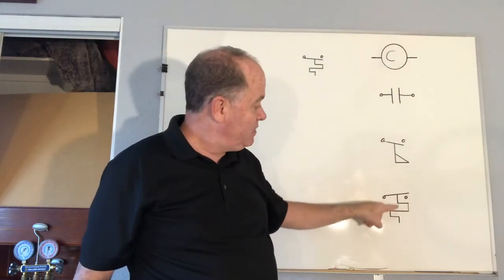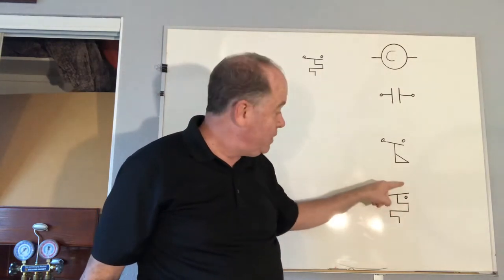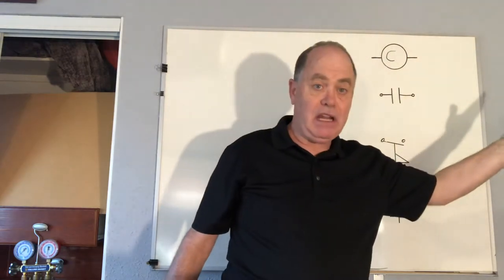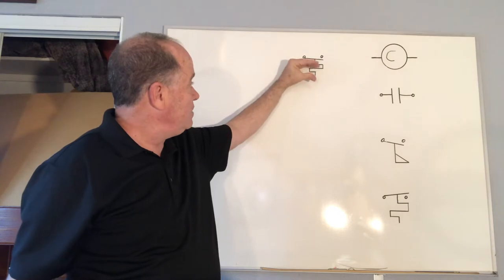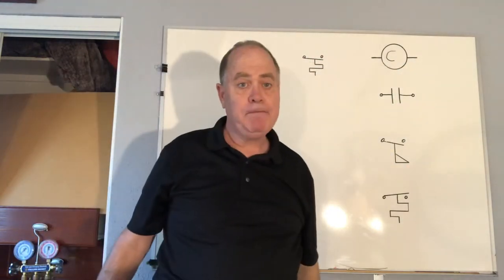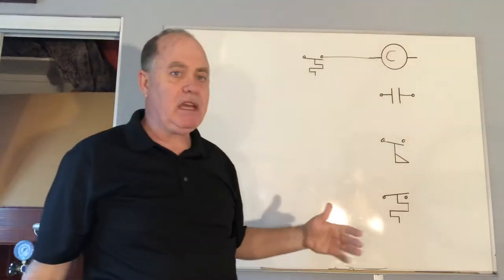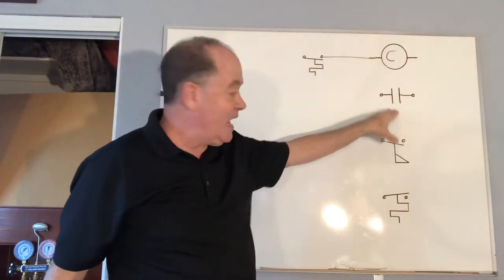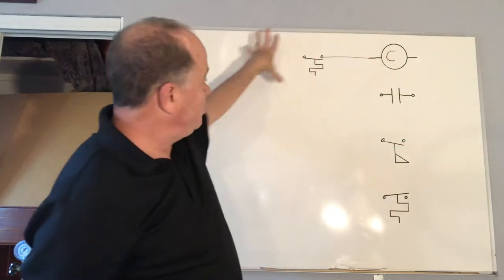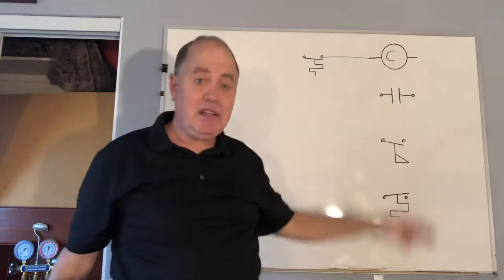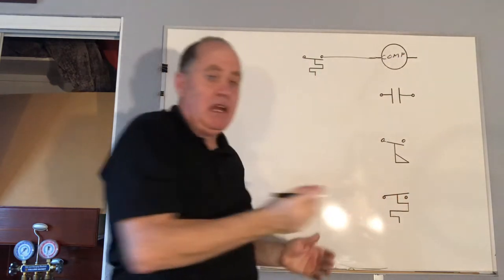This is a heating thermostat, representing a bi-metal — brass and steel together. When it gets cold it contracts, so when something gets too cold we close the heating thermostat and bring on heat. With a cooling thermostat, you have that bi-metal symbol, and when it gets too warm and expands, you close the contact and send energy down to something like a contactor coil. Generally, the switches, contacts, thermostats, humidistats, and flow switches are drawn on the left side of the diagram, and the electrical loads are on the right-hand side.